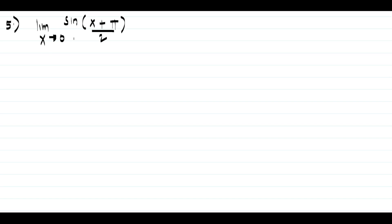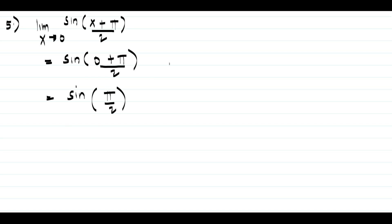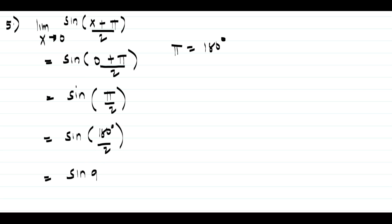For example number 5, we have the limit of sine of quantity (x plus π over 2) as x approaches 0. Substituting x equals 0 gives sine of (0 plus π over 2), which is sine of π over 2. Since π equals 180 degrees, this is sine of 180 divided by 2, which is sine 90 degrees. The value of sine 90 degrees is 1, so our answer is 1.